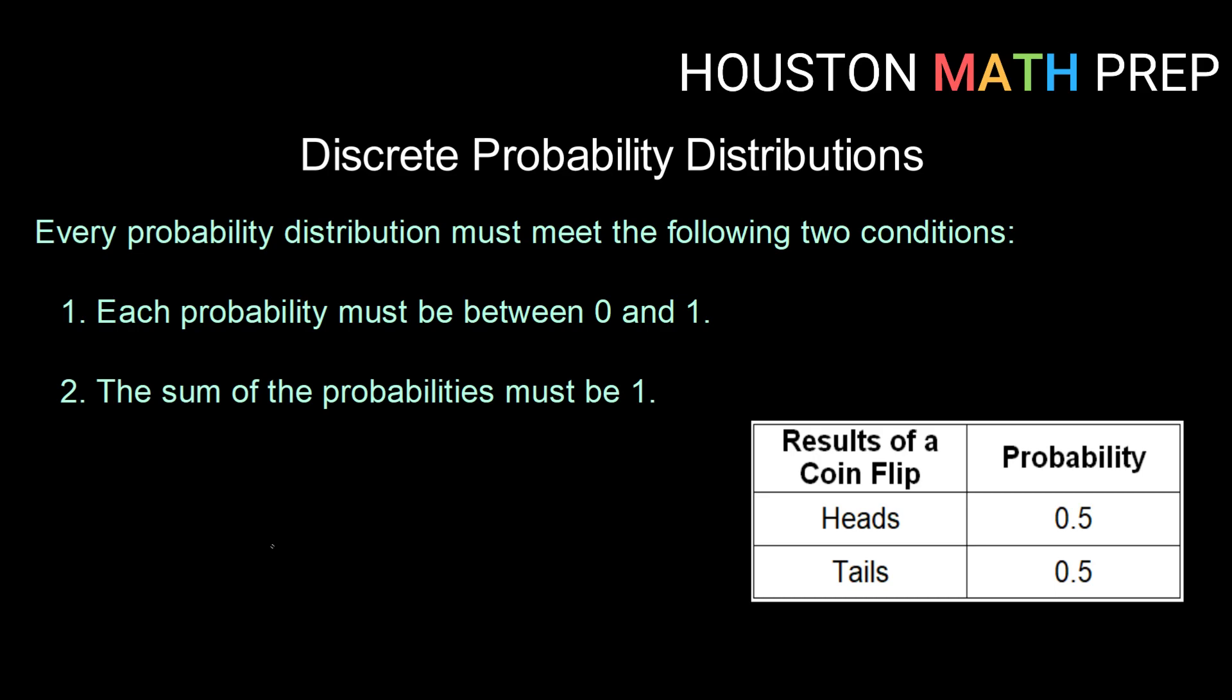So the two things, each probability must be between 0 and 1. Remember with probability, a probability of 0 means it cannot happen and a probability of 1 means it is certain to happen. Anything in between that is a percent chance, but we cannot have negative probabilities and we can't have a probability greater than 1.